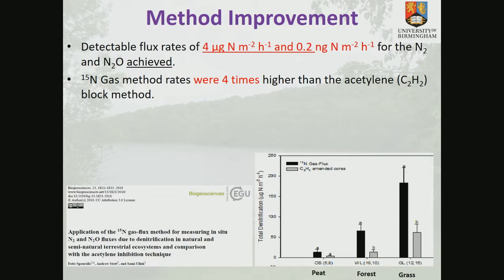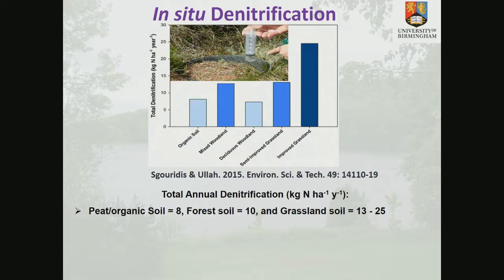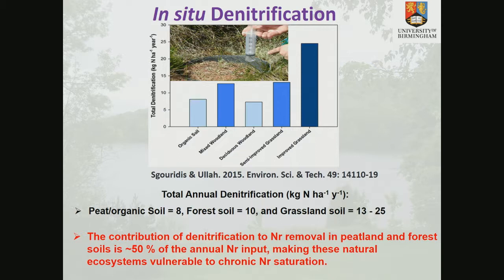Once we established the sensitivity of our systems, we did field measurements. Our injections of the tracer mimicked daily nitrogen deposition rates in peat and forests, and fertilizations in grasslands. The in-situ denitrification across land use types from peat and organic soils to improved fertilized systems had total rates ranging from 8 kg N per hectare in peat systems to about 13 to 25 kg in grassland systems. These forest and peat systems are only able to remove 50 percent of what's being deposited — increasing the likelihood of chronic nitrogen saturation.